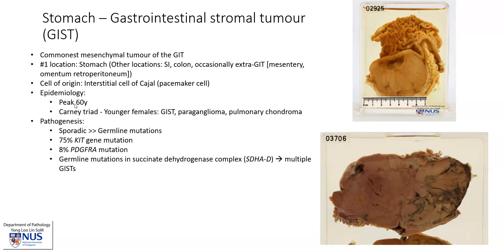It peaks in late middle age, and sometimes it is associated with the Carney triad, which usually occurs in younger female patients. The triad consists of GIST, paraganglioma, and pulmonary chondroma, a benign tumor of the lung.